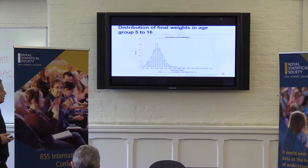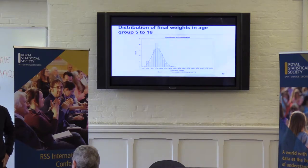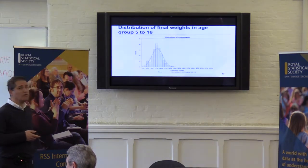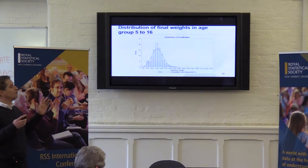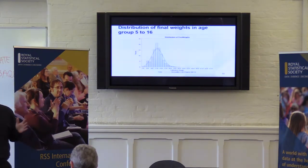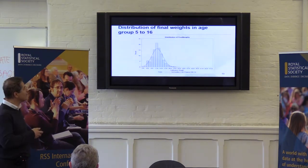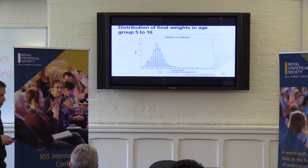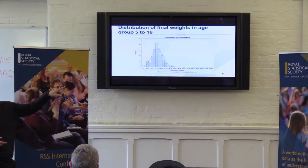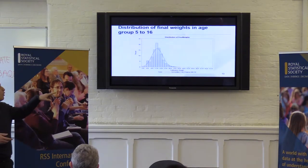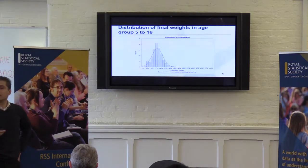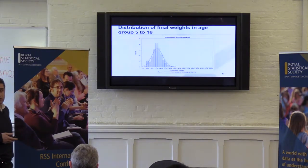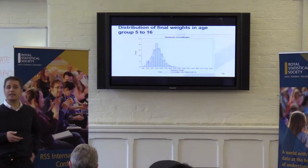Looking at the achieved sample: the plot of the final weights in the age group 5 to 16 shows the distribution is nice and symmetric. We have a small number of cases with large weights, which happened mostly in the 16 age group, since that's only one single age, and in some regions we had slightly poor responses, meaning the weights were slightly large.